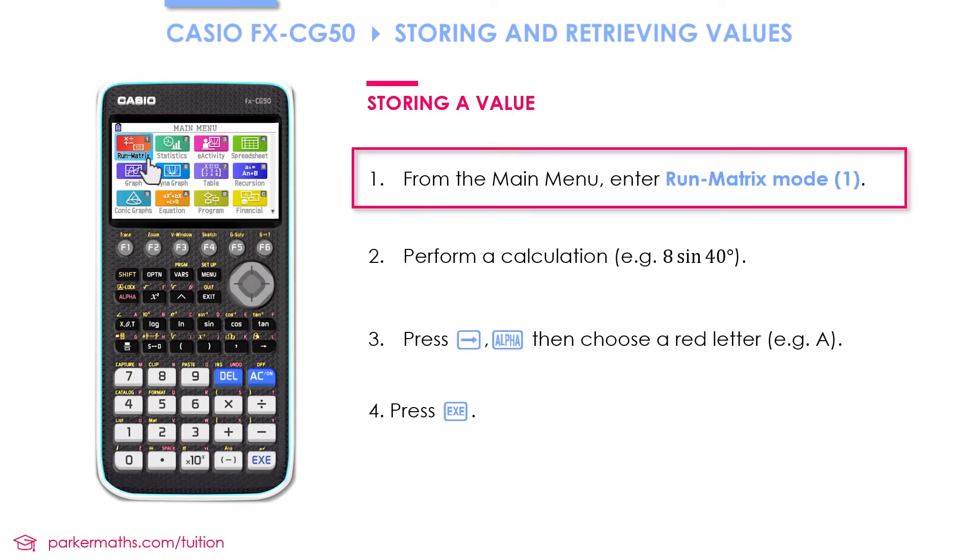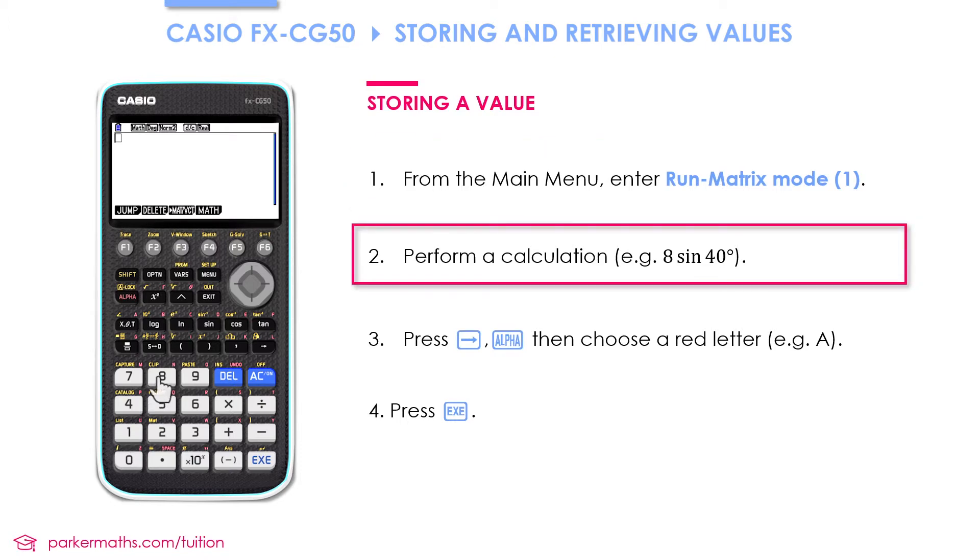So to start with I'm going to enter run matrix mode, number one. Then I need to do a calculation. I'm going to do 8 sin 40.